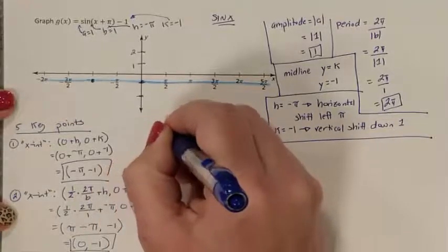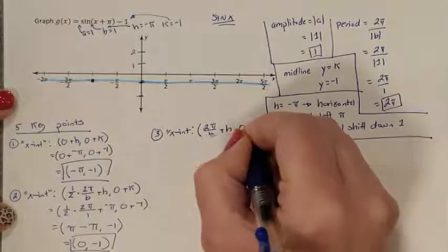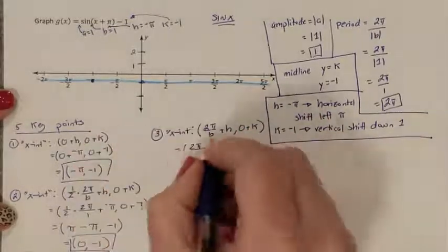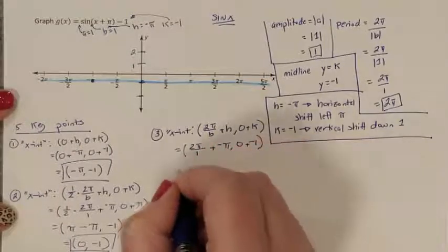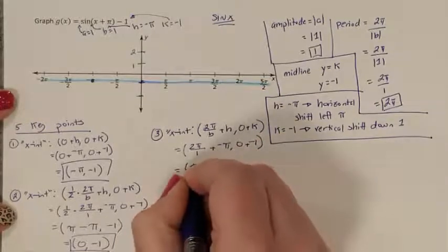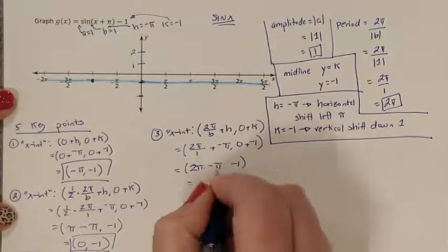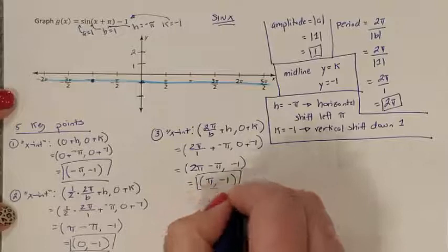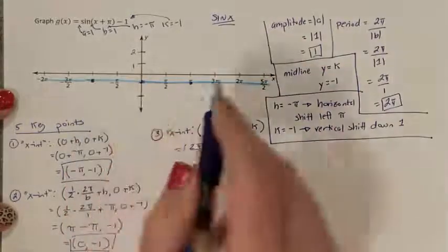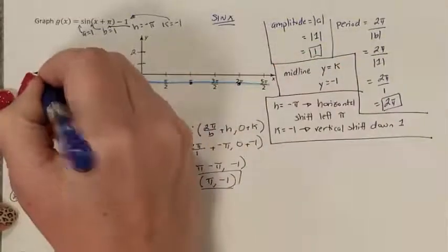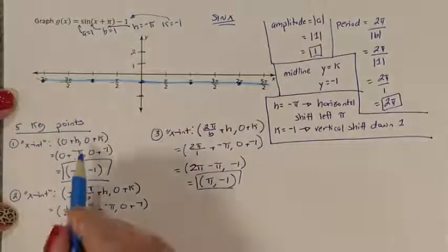For the third intercept, h goes with x and k goes with y. With b = 1, h = negative pi, k = negative 1: the x fraction gives 2 pi, then subtract pi, giving pi; y = negative 1. So my third intercept is at pi, negative 1. These intercepts are repeated all the way through so we can complete the sine function.